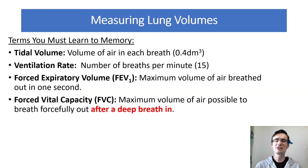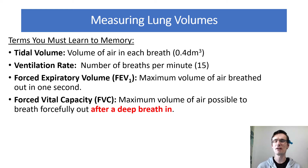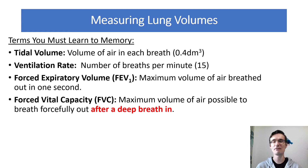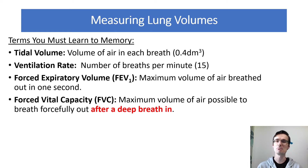Before we look at any disease to do with lungs, you need to understand four key definitions. First, tidal volume is the amount of air you breathe in each breath — about 0.4 decimetres cubed. Ventilation rate is the number of breaths per minute, about 15 at rest. Then there's forced expiratory volume (FEV1), which is the maximum volume of air breathed out in one second, and forced vital capacity, which is the maximum amount of air possible to breathe out after a deep breath in.